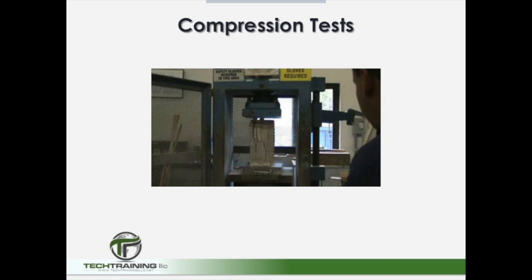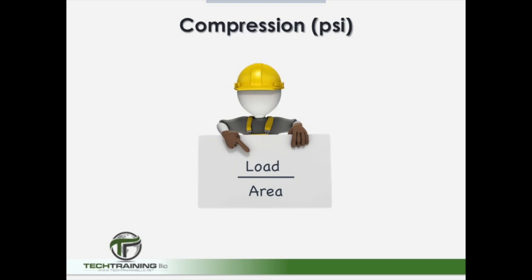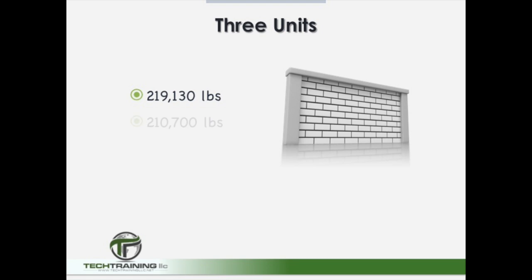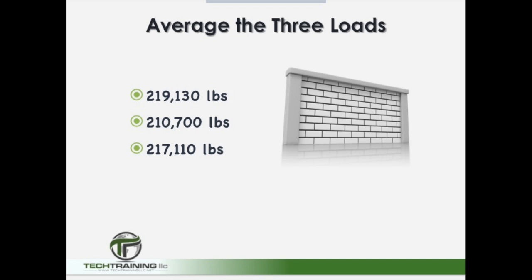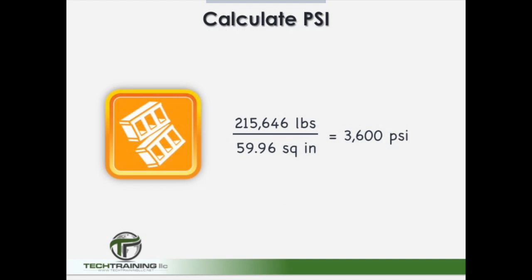Now we can move ahead with our compressive strength calculations. Compressive strength is calculated as load over area. We have broken three units with loads of 219,130 pounds, 210,700 pounds, and 217,110 pounds, giving us an average load of 215,646 pounds. Divided by our net area of 59.96 square inches gives us a compressive strength of 3,600 PSI when rounding to the nearest ten.